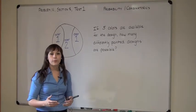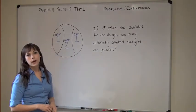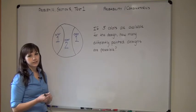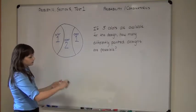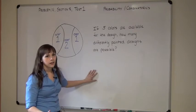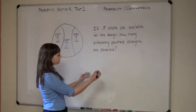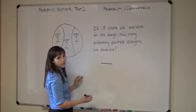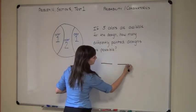Anytime you have a problem that asks you how many possibilities, you know you have a combinatorics problem and you can solve it in the same way. First we have to ask, how many decisions do we have to make? How many slots do we need to fill? Well, we have to choose color 1 and we have to choose color 2.